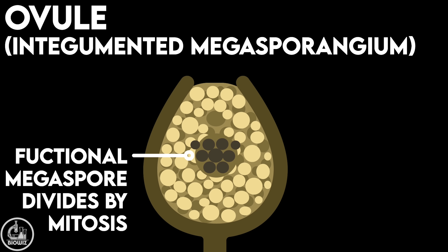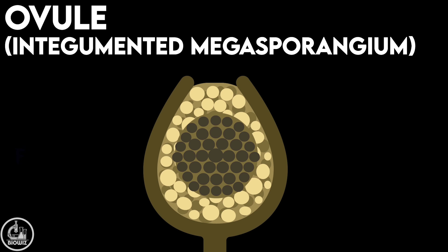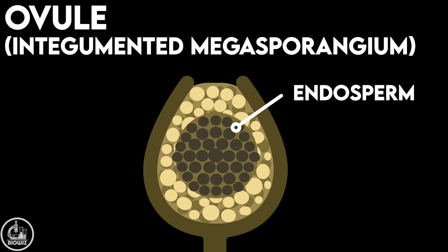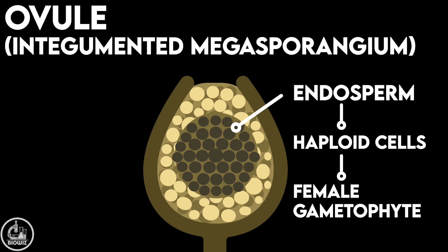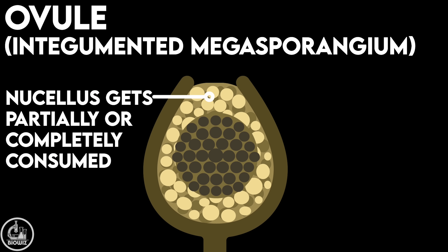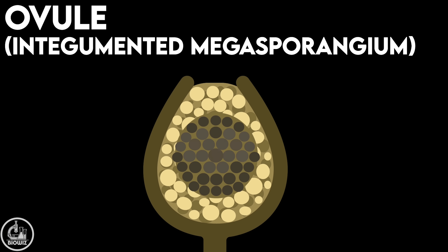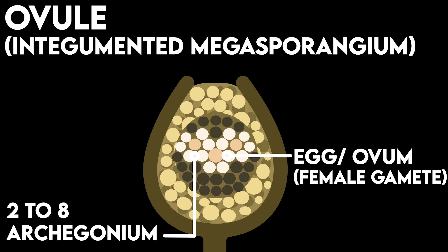This functional megaspore now divides repeatedly by mitosis, and the resulting structure formed is called the endosperm, which consists of haploid cells and represents the female gametophyte in gymnosperms. During this process, either a part of the nucellus or the entire nucellus can get consumed. Two or more female sex organs called archegonia develop inside the endosperm, each having one haploid female gamete, or egg.